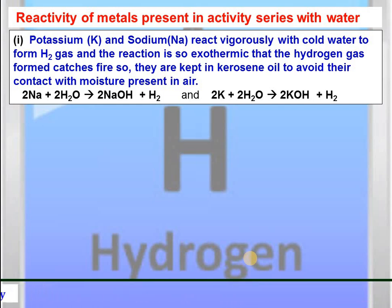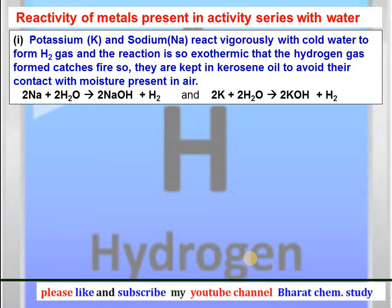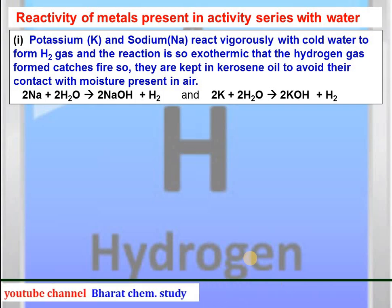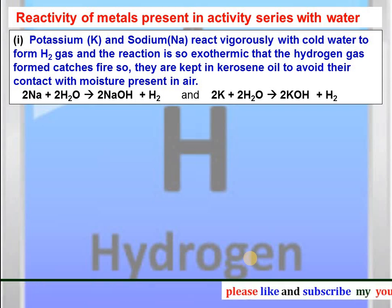The reaction can be represented as: sodium reacts with water to form NaOH and hydrogen gas. Similarly, potassium reacts with water to form KOH and hydrogen gas. It is very important to balance the chemical equations for these reactions.